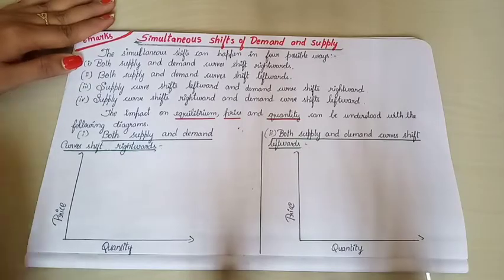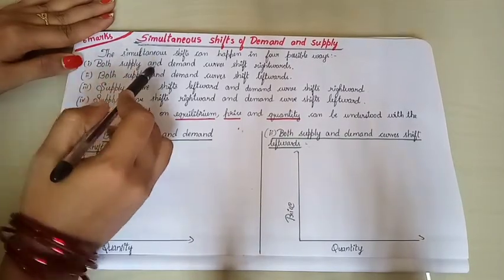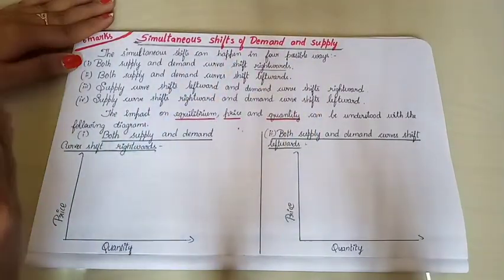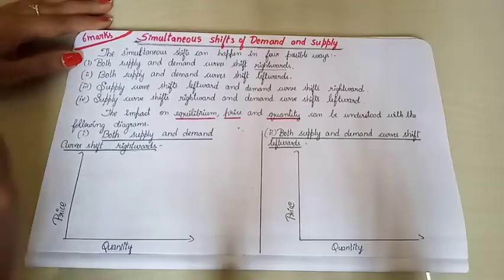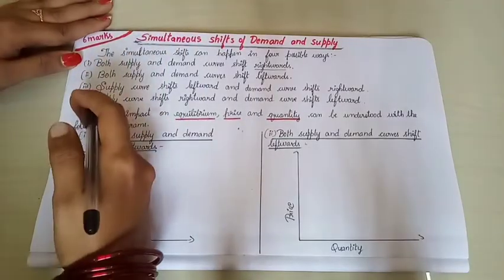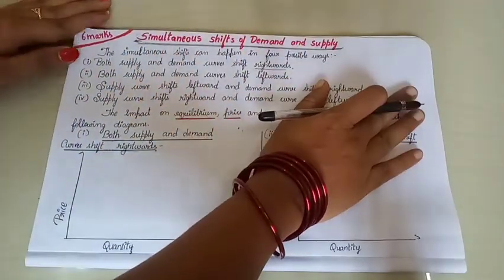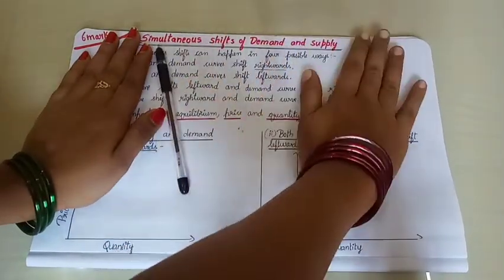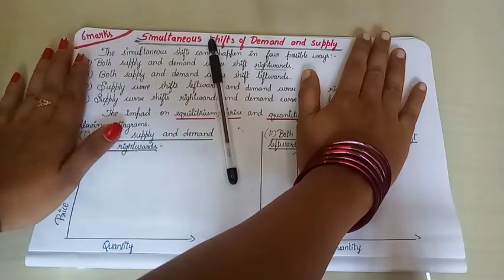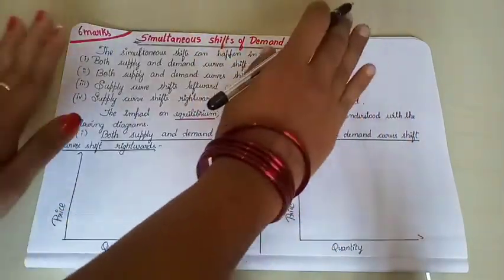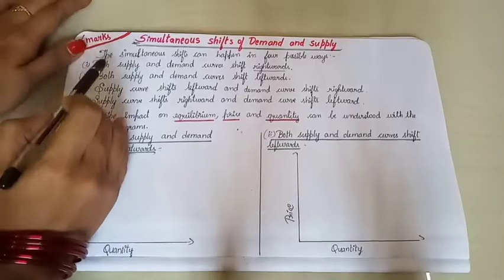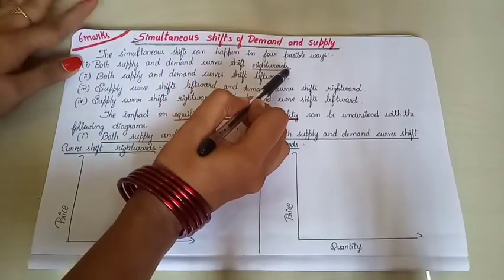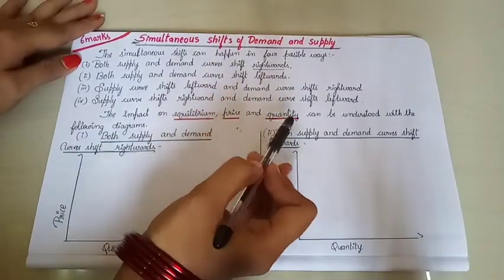The first possibility is: both supply and demand curves shift rightward. Rightward means moving in this direction — my right hand side. Leftward means moving downward or coming back. The first case deals with how equilibrium price and quantity change when both curves shift rightward.